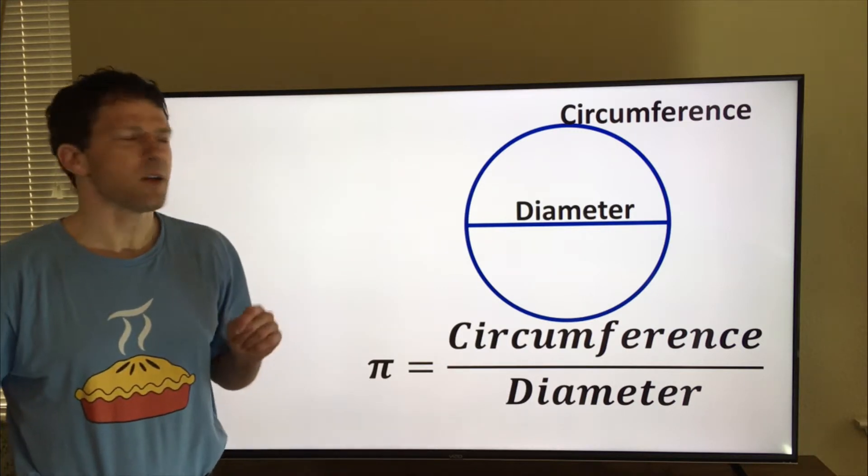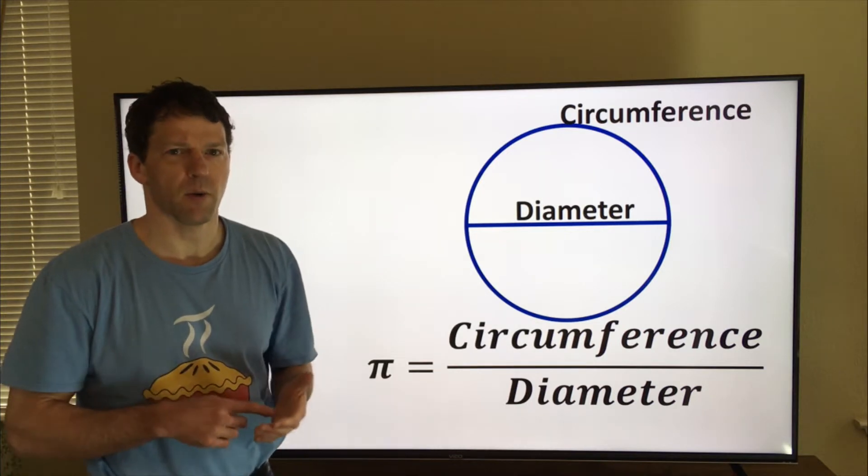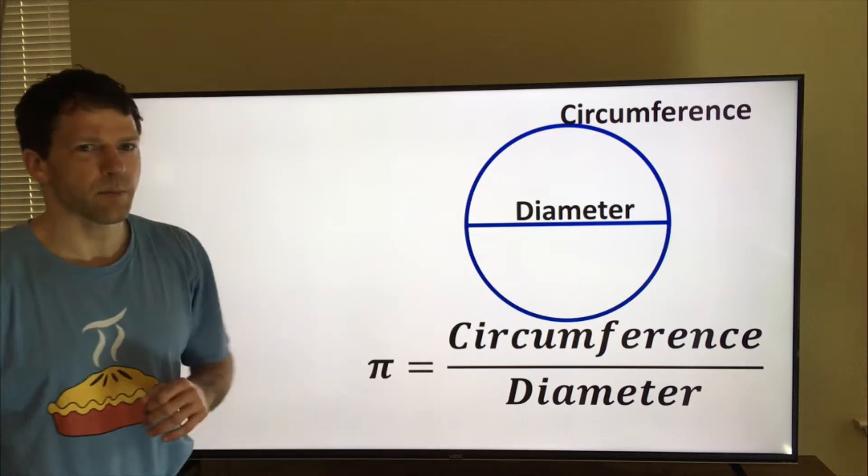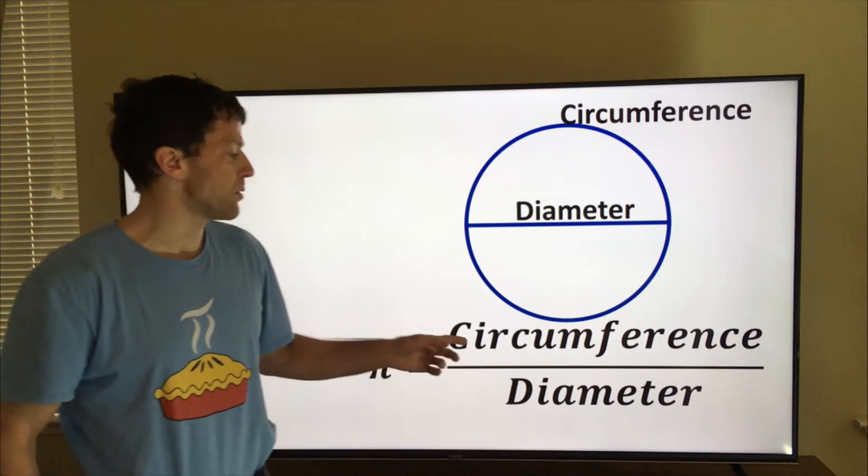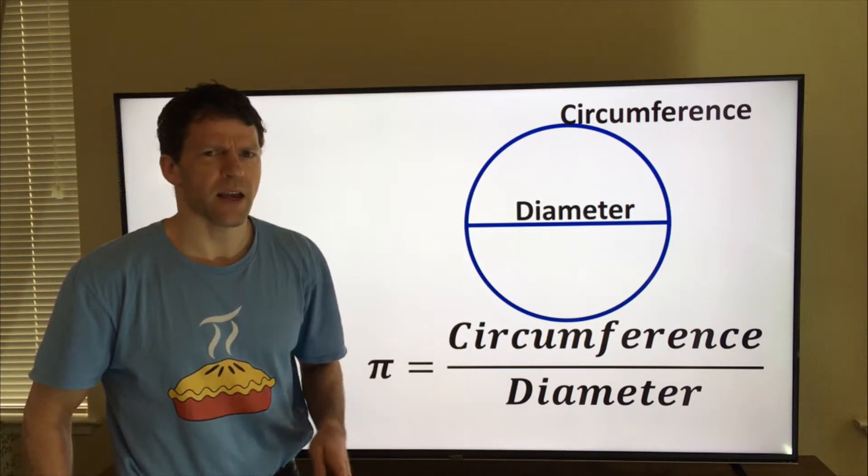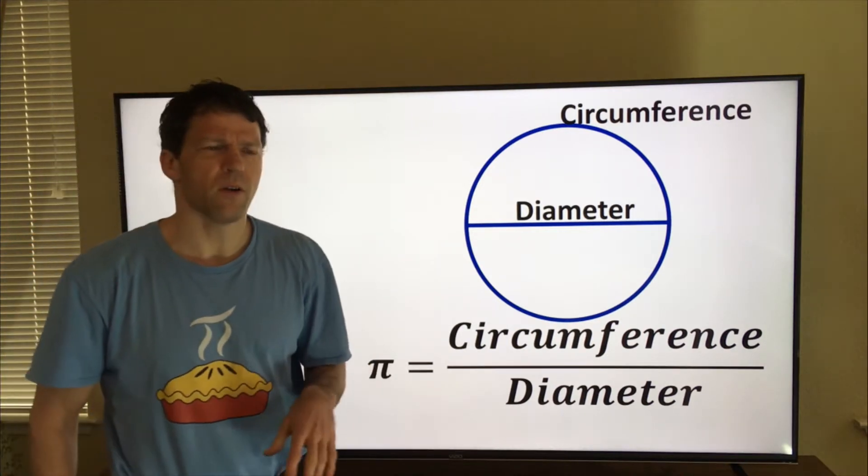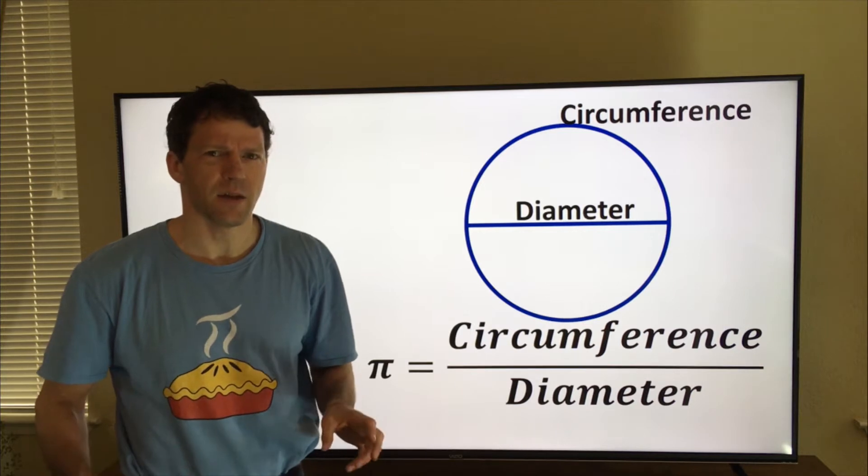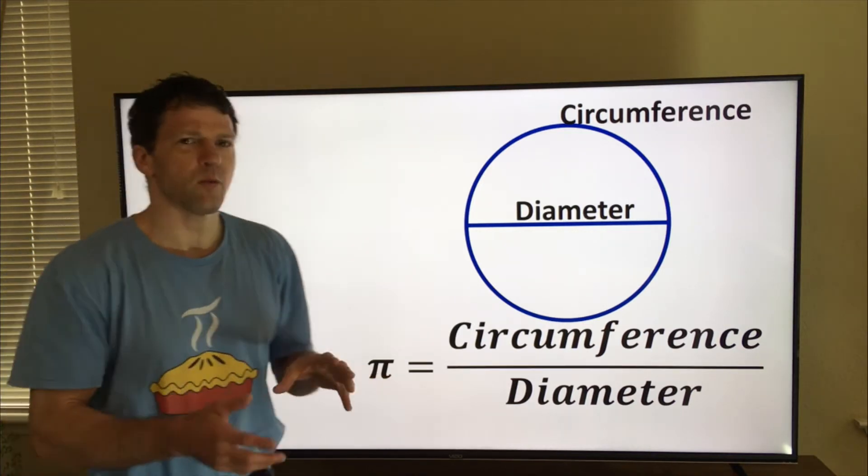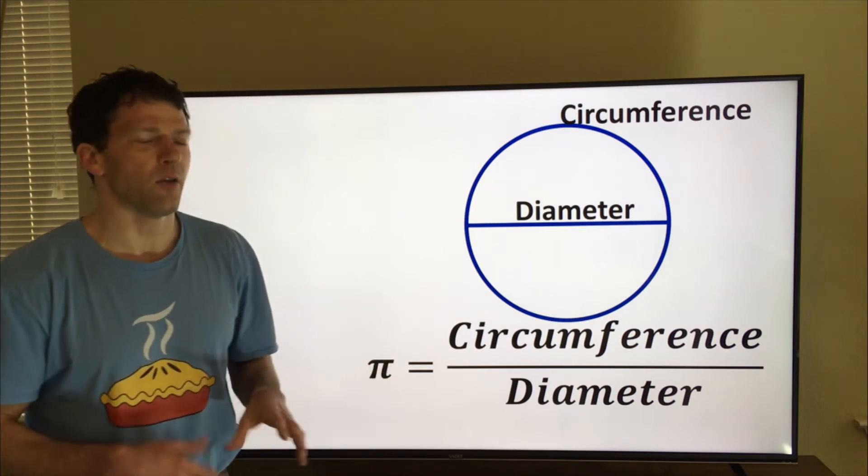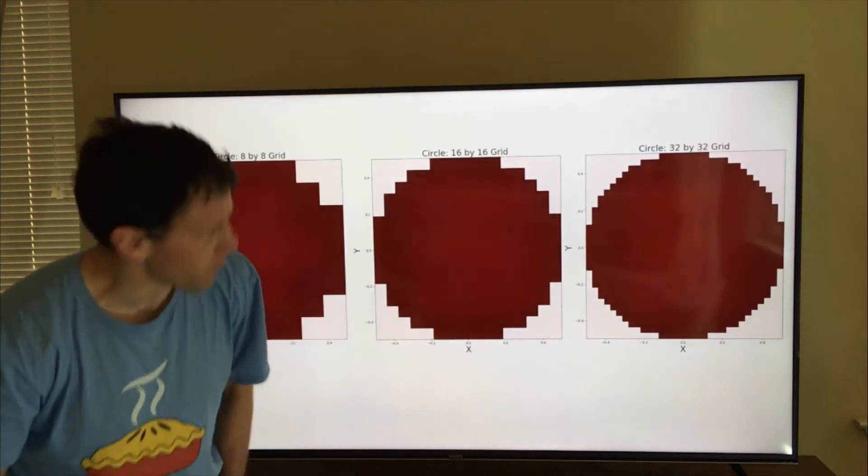But I want to show you something really cool about when you draw a circle on a computer screen or on a smartphone or anything that has pixels. Having studied calculus and limits and all this kind of stuff, you have a certain way of thinking and you think that the real world sort of follows the ideal world. But there's a discrepancy here that I'm going to show you.